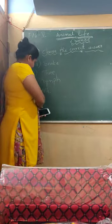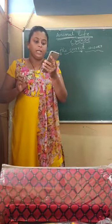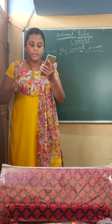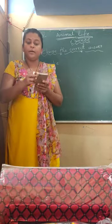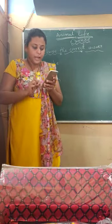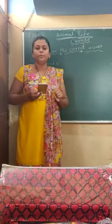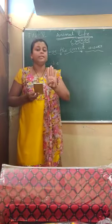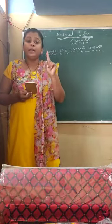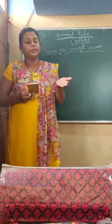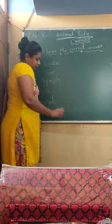The next question: an example of a mammal — the options are crow, frog, lizard, and whale. Mammals give birth to young ones, like human beings, cats, dogs, elephants, tigers, and lions. In this group, crow lays eggs, snake lays eggs, and lizard also lays eggs. Only the whale gives birth to young ones, so it is classified as a mammal. The answer is whale.